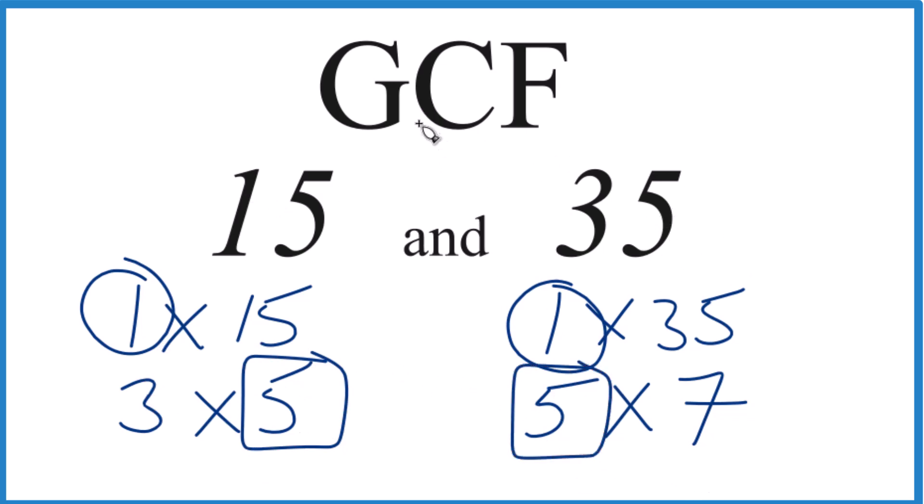So in answer to our question, the GCF for 15 and 35 is going to be 5. There are other methods to do this, like prime factorization, but for smaller numbers, this is usually quickest.